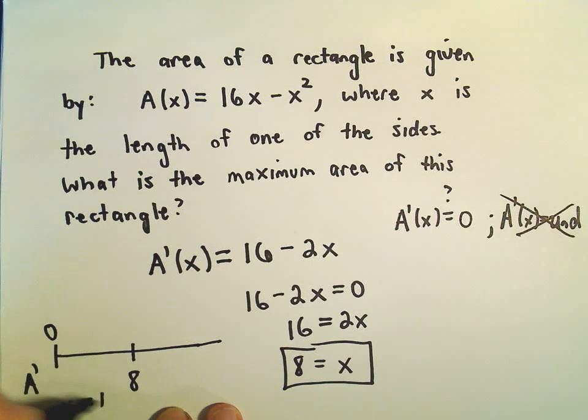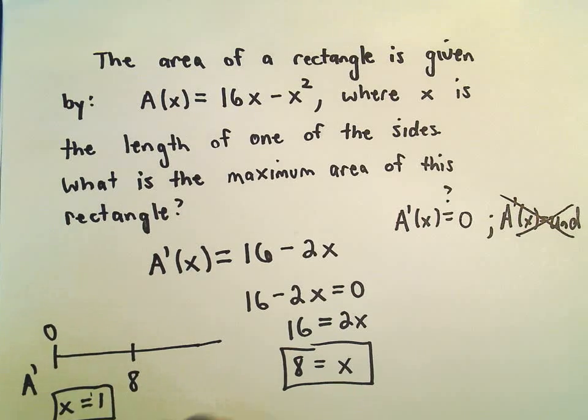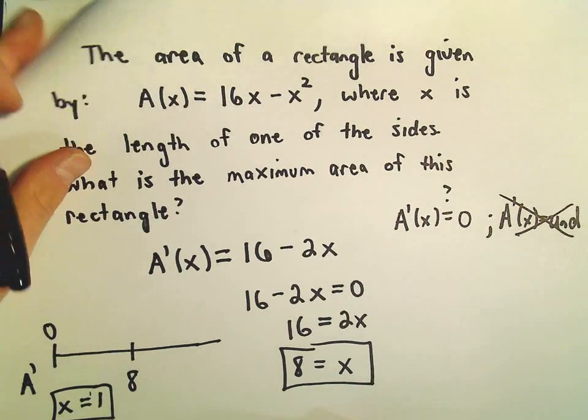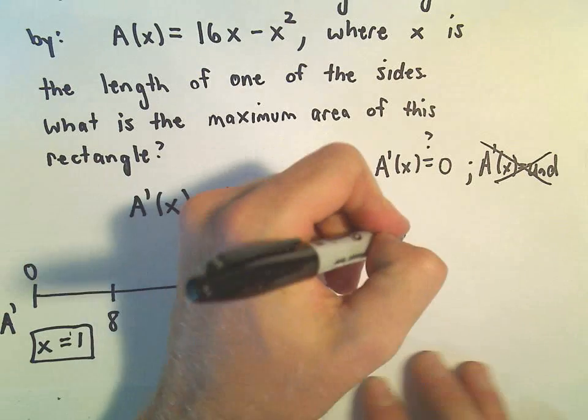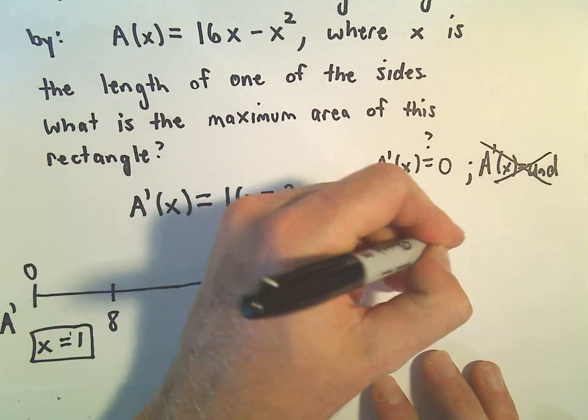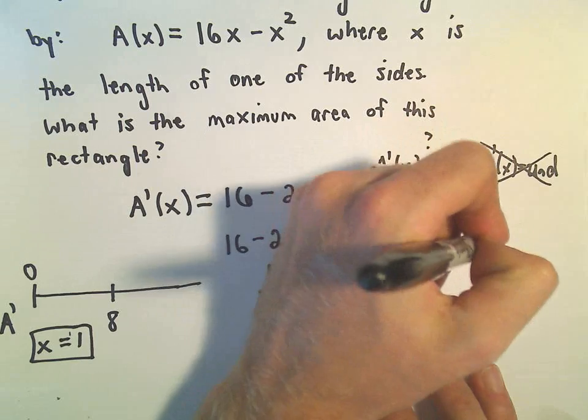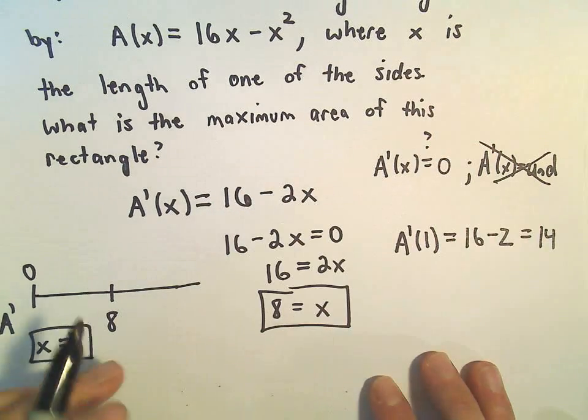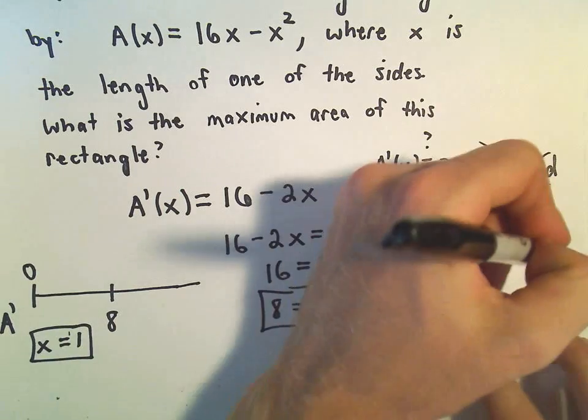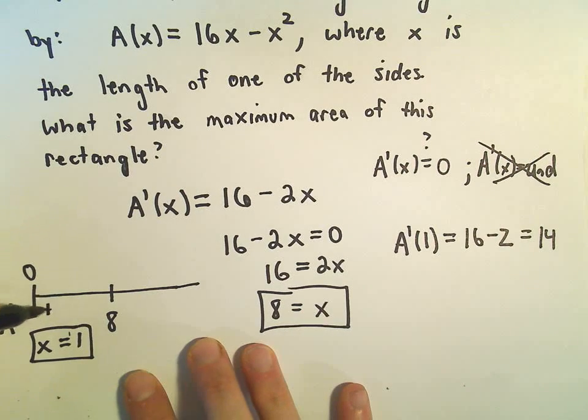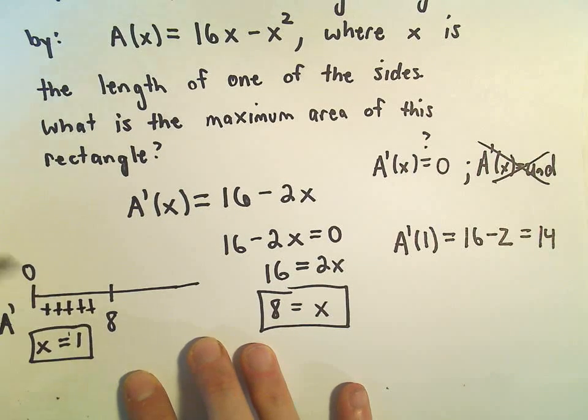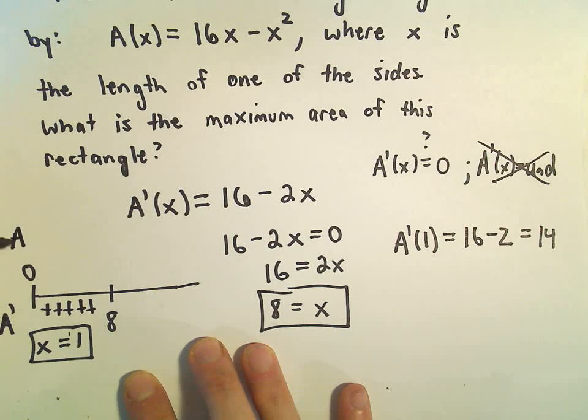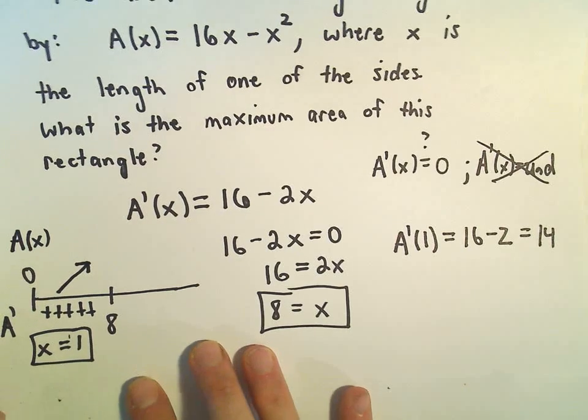Maybe I'll take x = 1, just because that's a nice, easy number to do the arithmetic with. If I plug that into the derivative, A'(1), well, I'm going to get 16 - 2. 16 - 2 is 14. Again, the important thing is that this is a positive number. So it says the derivative is positive over this interval. And that tells me that the original function, A(x), that implies that the original function is increasing.